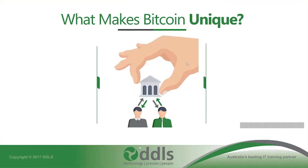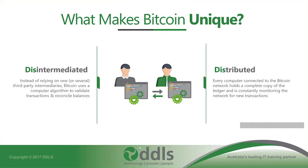So what made Bitcoin unique? It was really one thing in particular: it was able to disintermediate things. Instead of relying on one or several third-party intermediaries, Bitcoin uses a type of computer algorithm to validate transactions, reconcile balances, and also enforce certain rules on the network.